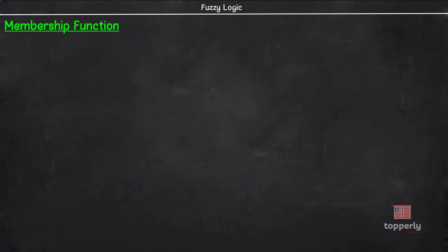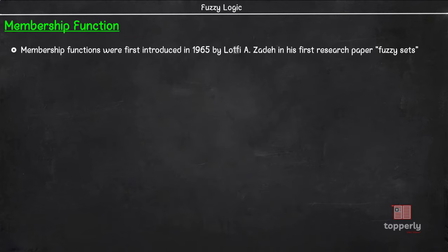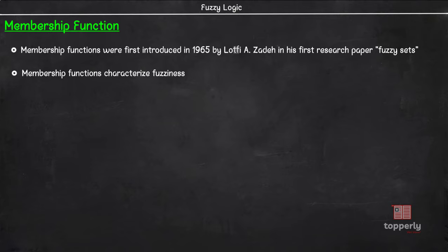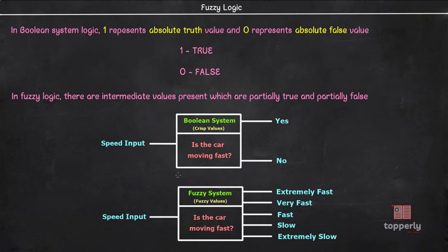Now we will talk about membership functions. Membership functions were first introduced in 1965 by Lotfi Zadeh in his first research paper, Fuzzy Sets. They characterize fuzziness — that is, all the information in a Fuzzy set, whether the elements are discrete or continuous. Essentially, they represent the degree of truth in a system. For instance, in the previous example, for a Boolean system having crisp values, the solution 'no' represents absolute false value, so the membership value is 0, whereas for the true value 'yes', the membership value is 1.